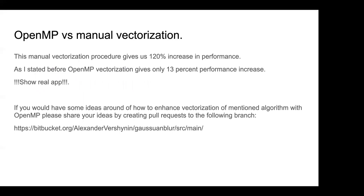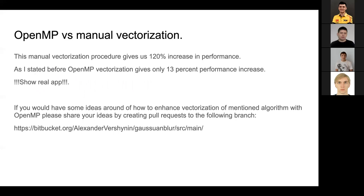With this manual vectorization, I obtained a 120% increase in performance, which is quite good and much better than the gain from just the OpenMP vectorization procedure. Maybe I made some mistake with the OpenMP vectorization — if you have ideas, please share them with me. I created a git repository for this purpose — the link is provided here — and you can create pull requests which I will review and merge.